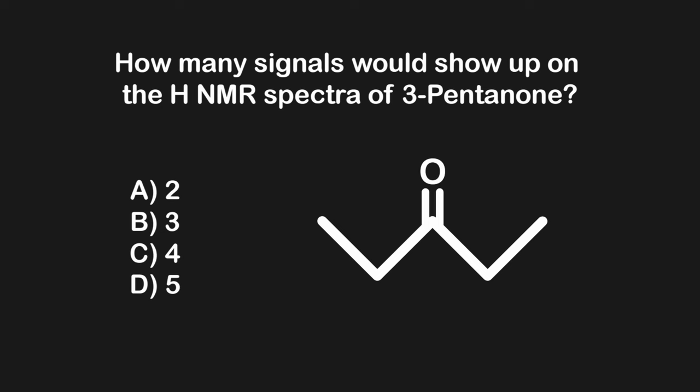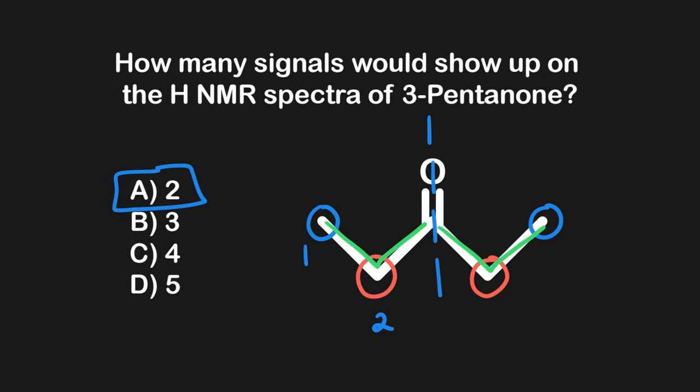Let's try the next problem without drawing a symmetry line, since we ultimately want to be able to answer these questions without redrawing the entire molecule. This question asks: how many signals would show up on the HNMR spectra of 3-pentanone? Since this molecule is linear and unbranched, we only need to consider symmetry across an imagined vertical symmetry line. Across this line, the molecule is symmetrical, so mirrored hydrogens will be identical. Only the central carbonyl carbon will lack hydrogens, so in total there will be two unique hydrogens and thus two signals, making answer choice A correct.